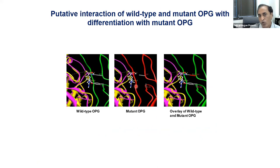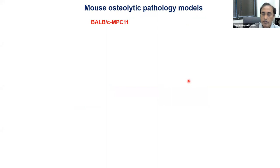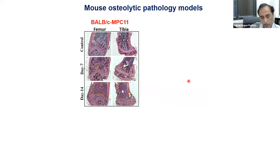We moved forward with OPG Y49R, which showed the highest significance — retaining RANKL-inhibitory function while having abolished TRAIL binding. Superimposing wild-type and mutant OPG models showed that the tyrosine residue at position 49 specifically mediates interaction with TRAIL. Replacing tyrosine (Y49) with arginine loses the TRAIL interaction while keeping RANKL binding intact, giving us hope that this OPG variant could be used for therapeutic purposes.